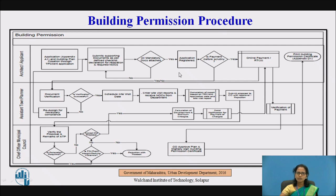After application registration, you have the payment — specifically payment before scrutiny. Scrutiny is nothing but the processing fees. The scrutiny is divided into two levels: the first level is carried out by the assistant town planner, and the second scrutiny is done by the chief officer of the municipal council.